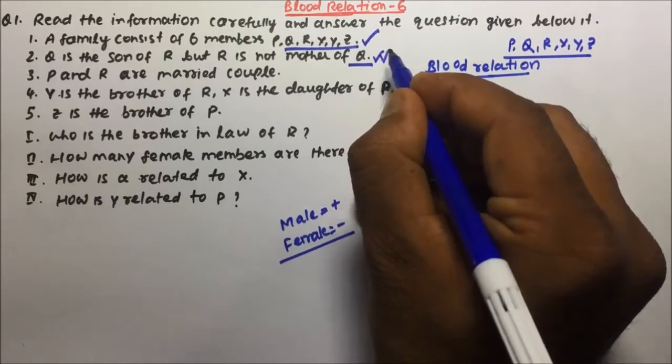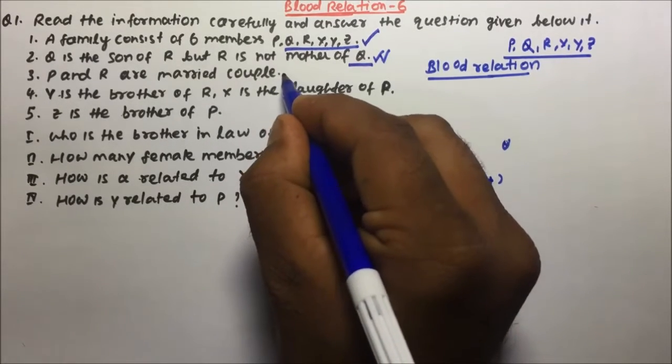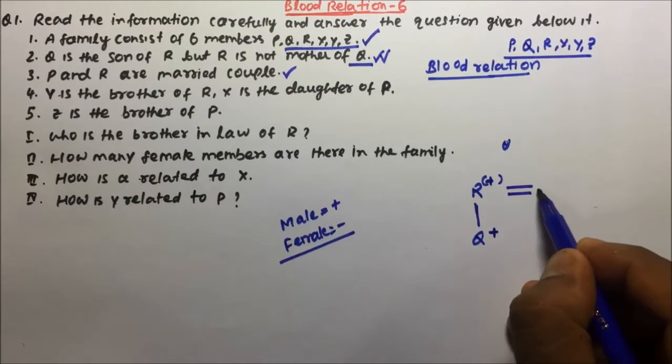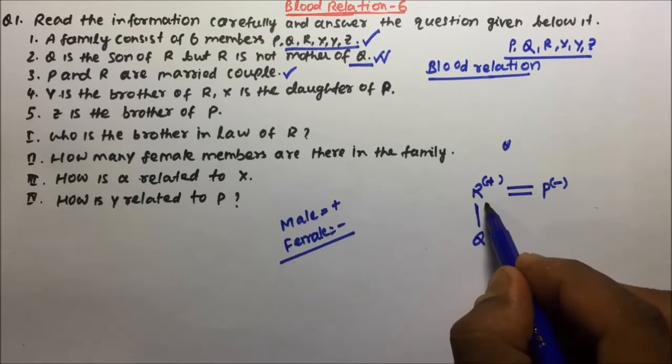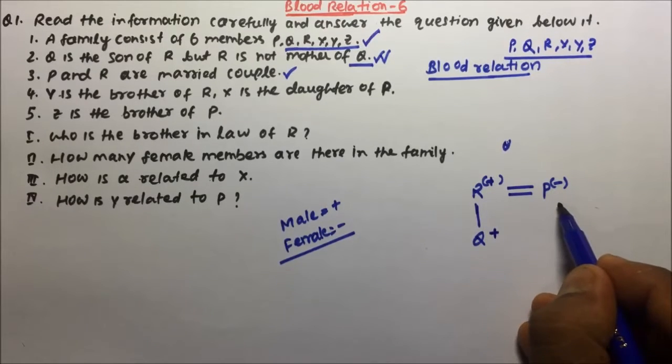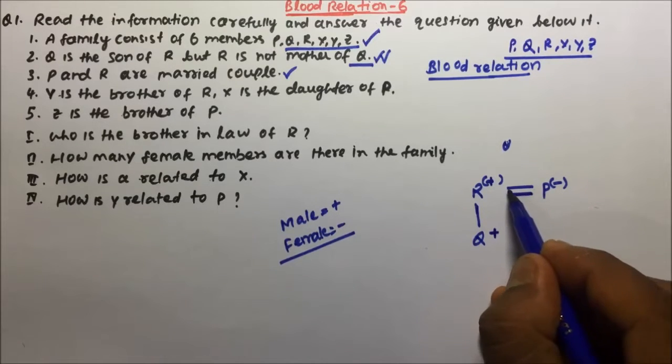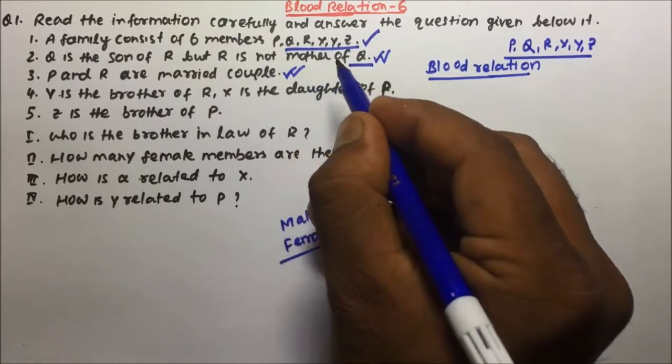So if R is not mother then R will be father. Now the second statement we have completed, drawn in the form of blood relation tree. Next is P and R are married couple. So if P is married to R then P will be female because R is already male. They are married to each other, husband-wife relation is there. So my statement three is also completed.